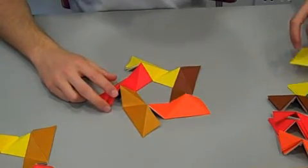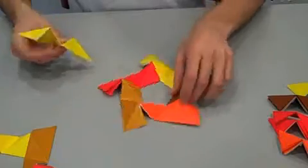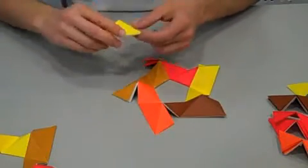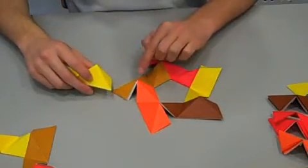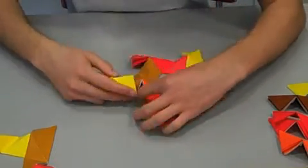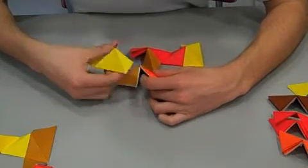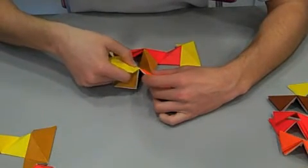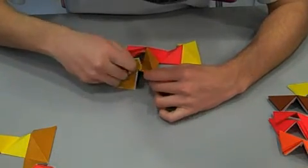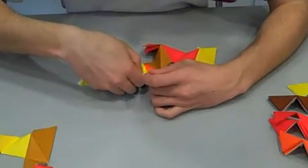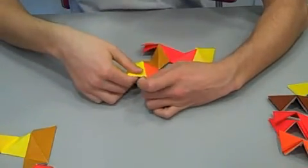We take our yellow. Do the same trick. We put it into the second section of the orange. First section. Second section. Like that.